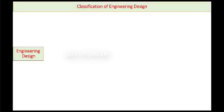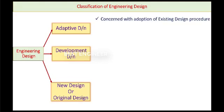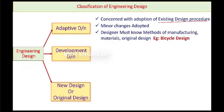Let's see the classification of engineering design. There are three types of engineering design. First one is adaptive design. Second one is development design. Third one is new design. This adaptive design is concerned with the existing design procedure. This is nothing but what procedure we are regularly following. Minor changes can be adapted. Here little changes can be done. Here designer must know about the methods of manufacturing materials and original designs.